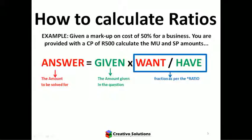How do we find the figures? I'm looking for markup and selling price, so I need the equation: answer equals the given times the want over the have. The want and the have form a ratio. We've got the ratio: markup on cost is 50%, so 50 over 100, and selling price is 150. The question gave us the cost price, and we're looking for the selling price and markup. Can we apply the general equation? Of course we can.